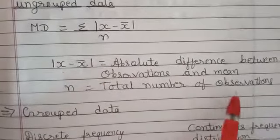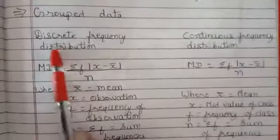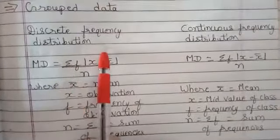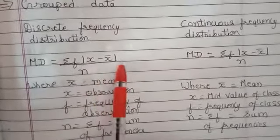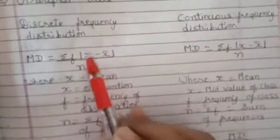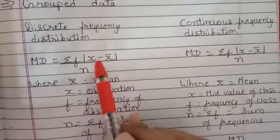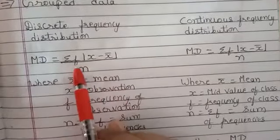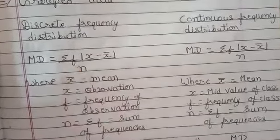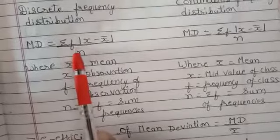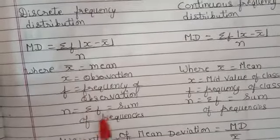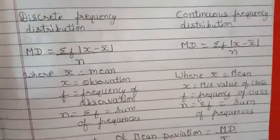For grouped data — discrete frequency distribution — the mean deviation formula is sigma f|x minus x-bar| upon n. We find the absolute value and multiply it by our frequency, where x-bar is mean, x is your observation, f is the frequency of that particular observation, and n is the sum of frequencies.